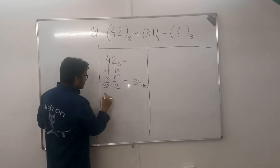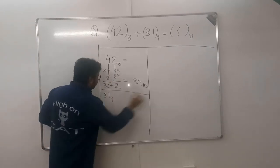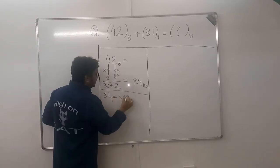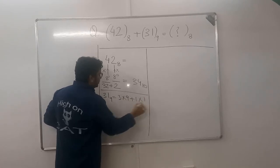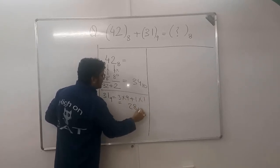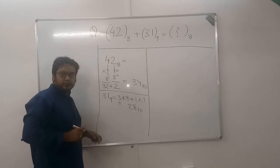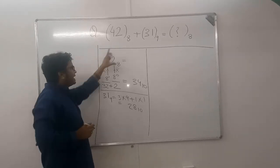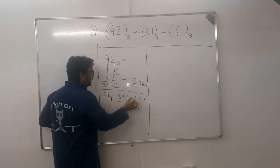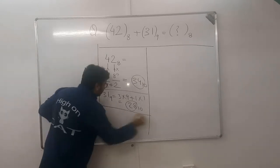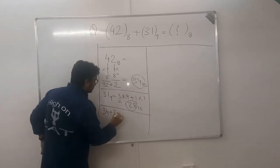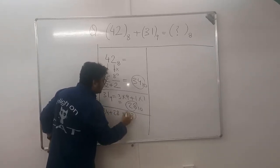Next one, 31 in base 9. So 31 in base 9 will be 3 into 9 plus 1 into 1, that is 28 in base 10. Now you need to add the 2, 34 plus 28. We know this value becomes equal to 62 in base 10.